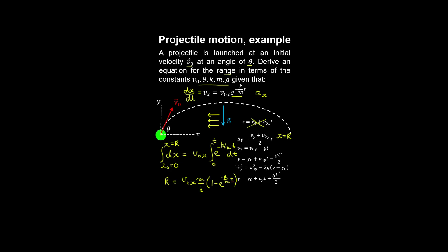To substitute for t, we use the vertical kinematic equation where y and y0 are both 0. Factoring out t gives an expression for the time of flight. Substituting for t and replacing v0x with v0 cos theta and v0y with v0 sin theta yields the final equation for range in terms of the given constants.